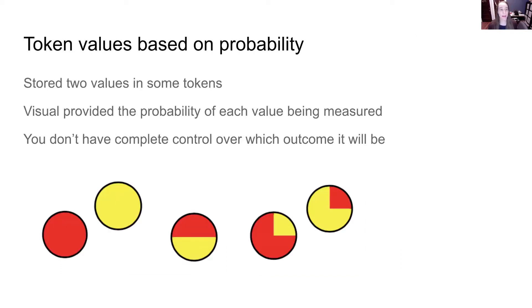All right, so let's think about those token values. We were essentially storing two values, in this case, red and yellow. And we provided a visual that communicated the probability of each value being measured.